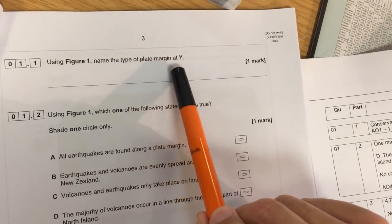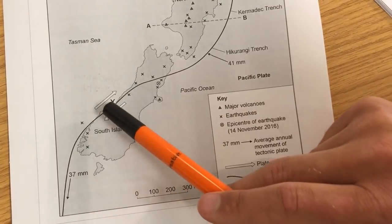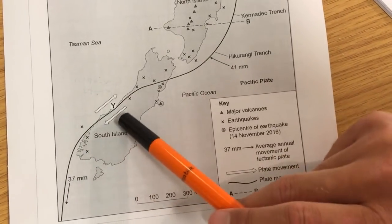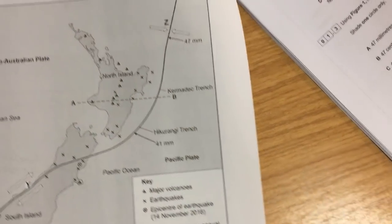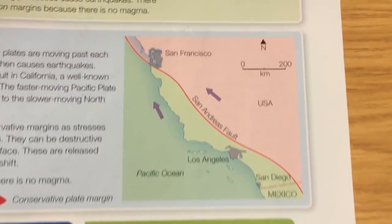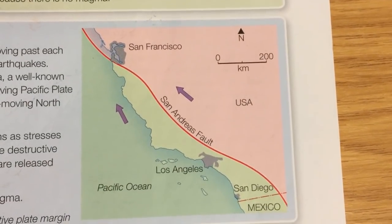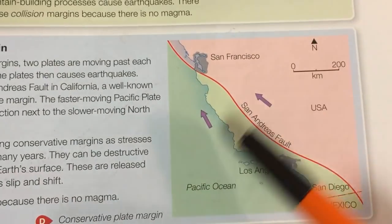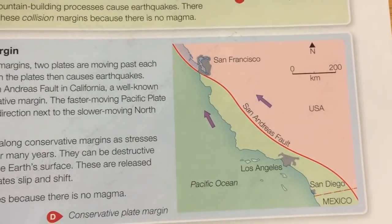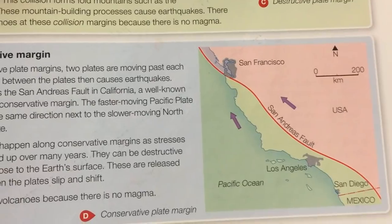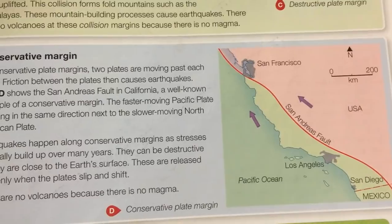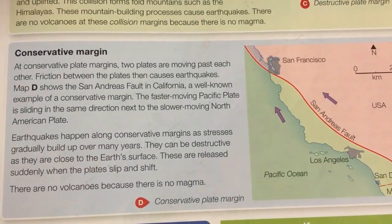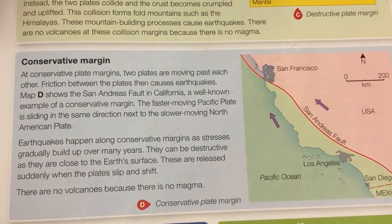Using Figure 1, name the type of plate margin at Y — you've got one plate going that way, one plate going that way. Often only one moves generally, so what would that be called? A conservative, passive, or transform plate margin. Conservative — there you go. Conservative plates can slide past one another in opposite directions, or as with the San Andreas Fault, two plates sliding alongside one another in the same direction but one faster than the other. It's that pressure build-up and slippage that causes the earthquake.